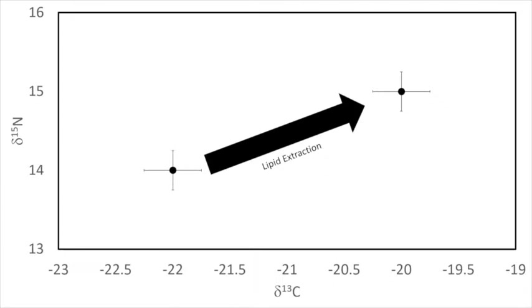During diet reconstruction using stable isotope analysis, to prevent variation in lipid content from confounding variation in diet, lipids must be extracted. Lipid extraction enriches both carbon and nitrogen signatures, as shown here. If appropriate techniques are used, then lipid extraction will provide a simpler, homogeneous matrix, simplifying diet reconstruction from stable isotope analysis.